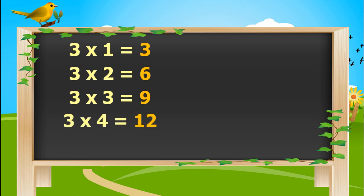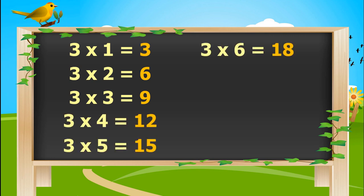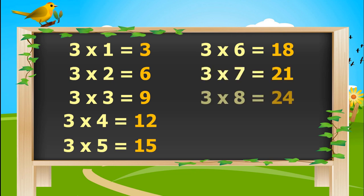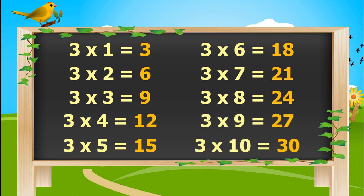3 times 4's are 12. 3 times 5's are 15. 3 times 6's are 18. 3 times 7's are 21. 3 times 8's are 24. 3 times 9's are 27. 3 times 10's are 30.